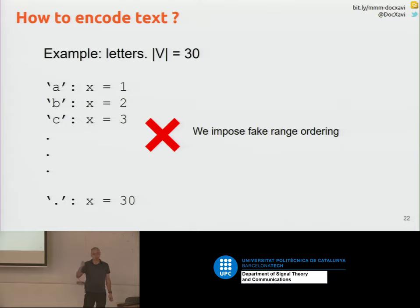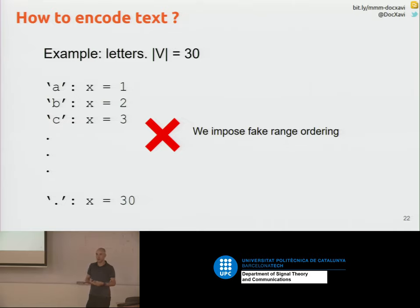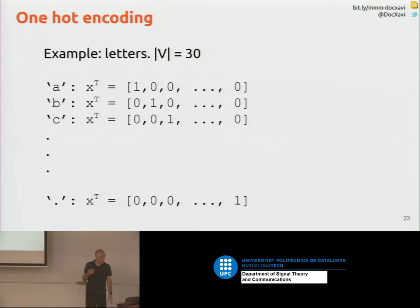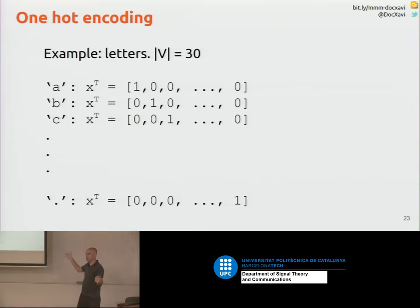One possible way is to start letter by letter, assign them an index, and each word could be a sequence of letters. But this encoding is a bit problematic, because it would impose a fake order — meaning letter 1 and letter 2 are closer than letter 1 and letter 30 — and there's no a priori need to encode similarity between letters numerically. Another option is one-hot encodings. For letters, we'd have a vector of dimensionality 30 with each position assigned to a letter, so each vector is equally far from any other.